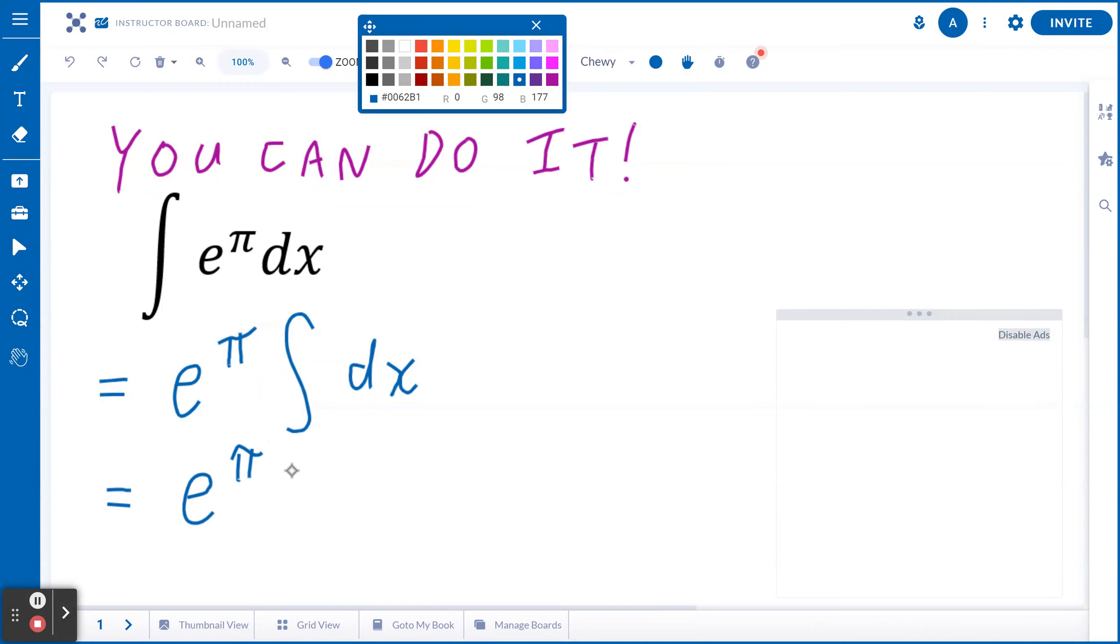When you find the antiderivative of one, that's going to be x. Don't forget you're looking for a family of solutions, add a constant c.